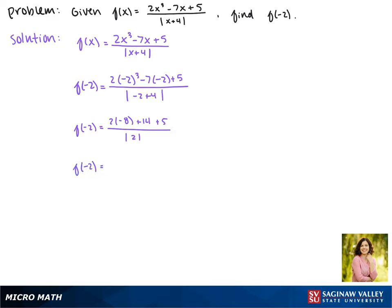Now, 2 times negative 8 is negative 16, so in the numerator, we have negative 16 plus 14 plus 5. In the denominator, we're taking the absolute value of 2, which is 2.